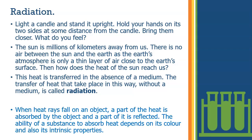When heat rays fall on an object, a part of the heat is absorbed by the object and a part of it is reflected. The ability of a substance to absorb heat depends on its color and also its intrinsic properties. Dark colors absorb heat and white or lighter colors reflect heat. Also, substances or objects which have smooth and shiny outer surfaces reflect heat, and if the outer surface is rough and uneven then they absorb heat. You will study about this in higher classes.